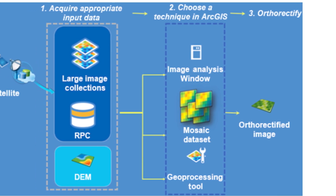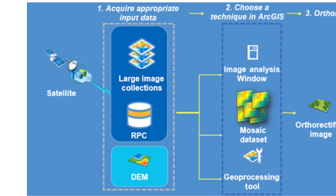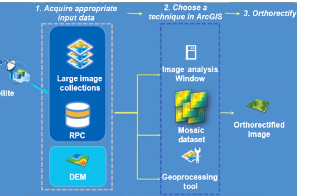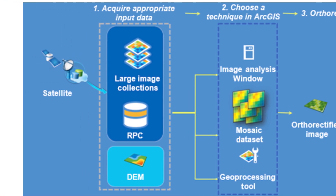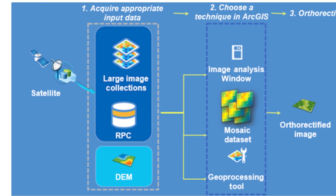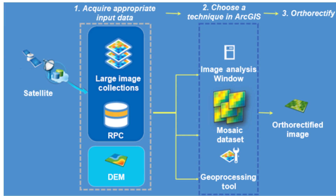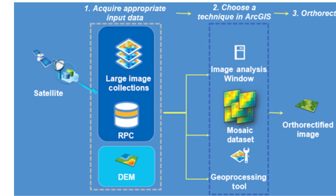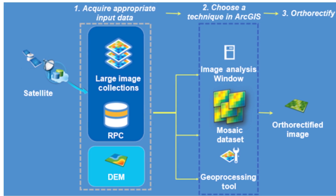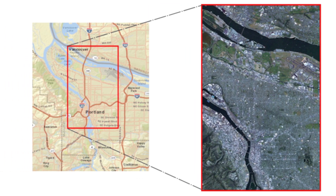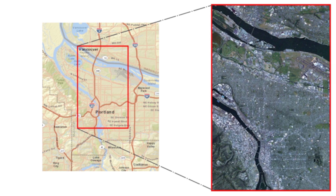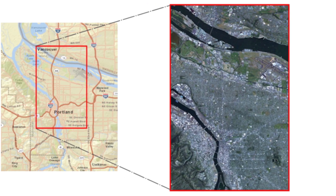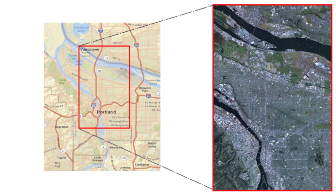Method one: using the image analysis window creates a temporary raster layer based on on-the-fly processing and applies the geometric function. The geometric process produces an orthorectified image based on a sensor definition and a terrain model. This method is used for orthorectifying one single image and only needing a quick visual result, without saving the result unless saving the map document or exporting the file to create an orthorectified raster.